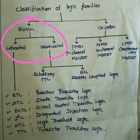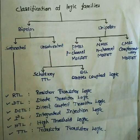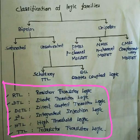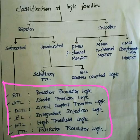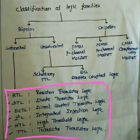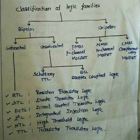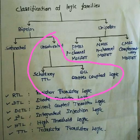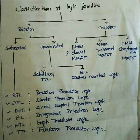The bipolar logic families are classified as saturated and unsaturated type. In saturated type of bipolar logic family, transistors are operated in between cutoff and saturation. Resistor-transistor logic RTL, direct coupled transistor logic DCTL, integrated injection logic I2L, diode transistor logic DTL, transistor-transistor logic TTL, and high threshold logic HTL are commonly used bipolar logic families. In unsaturated bipolar logic family, the transistors are operated in between cutoff and non-saturation. Schottky TTL and emitter coupled logic ECL are examples of unsaturated bipolar logic family.